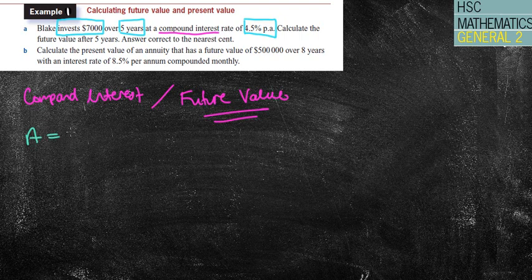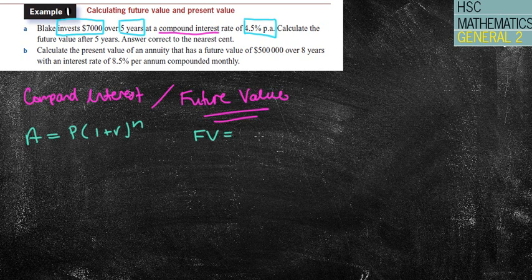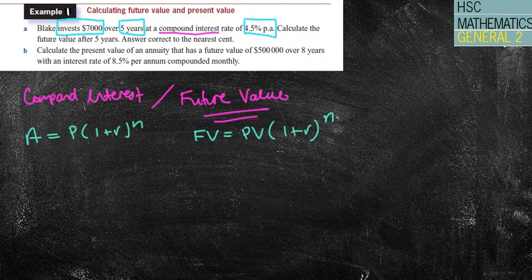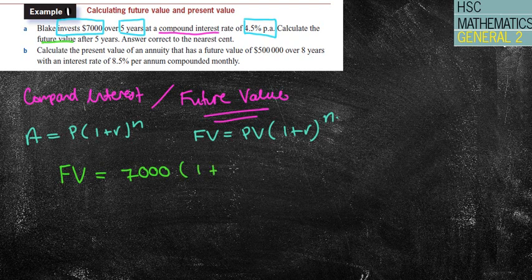You could use the A equals P brackets 1 plus R to the power of N. You could also use the FV equals PV 1 plus R to the power of N. It's whatever floats your boat. Either way, you've got your total amount or your future value equaling, and remember it says calculate the future value, so that's the question, my present value or my principal amount of $7,000, 1 plus my rate of 0.045, which is my 4.5% per annum.